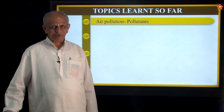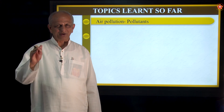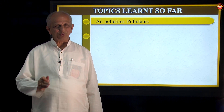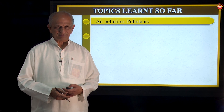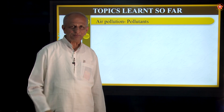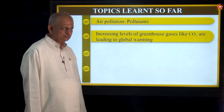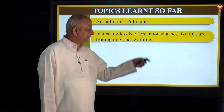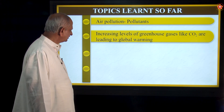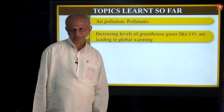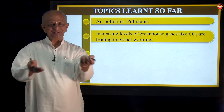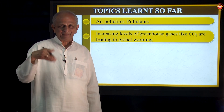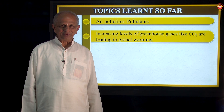Air pollution takes place due to factory smoke, smoke from vehicles, dust particles, burning of wood, and so on. All these lead to pollution of air. There are also special cases where increasing levels of greenhouse gases like carbon dioxide lead to global warming. Global warming means an increase in the surface temperature of the earth — earth is called a globe — and that temperature increase is called global warming.